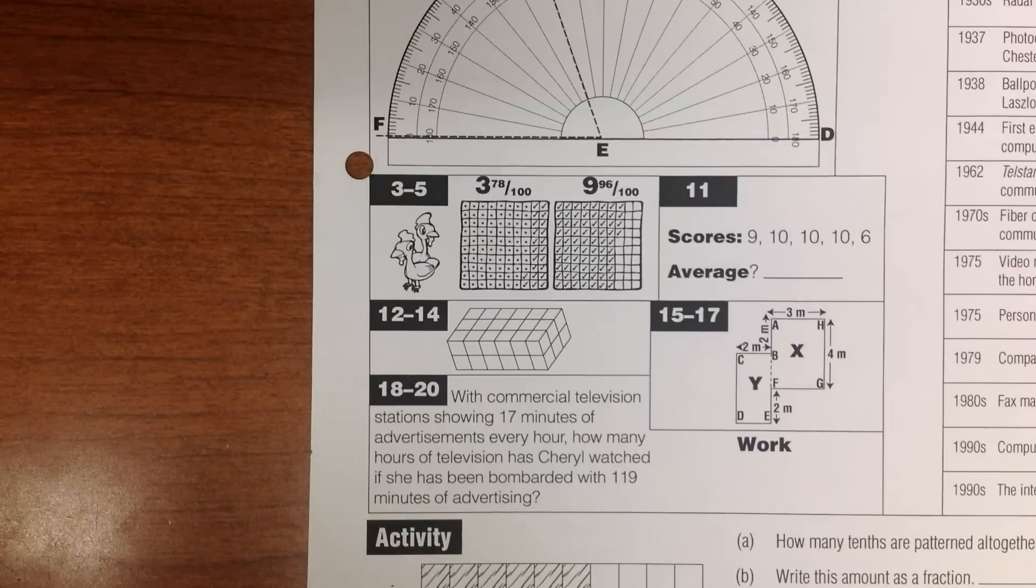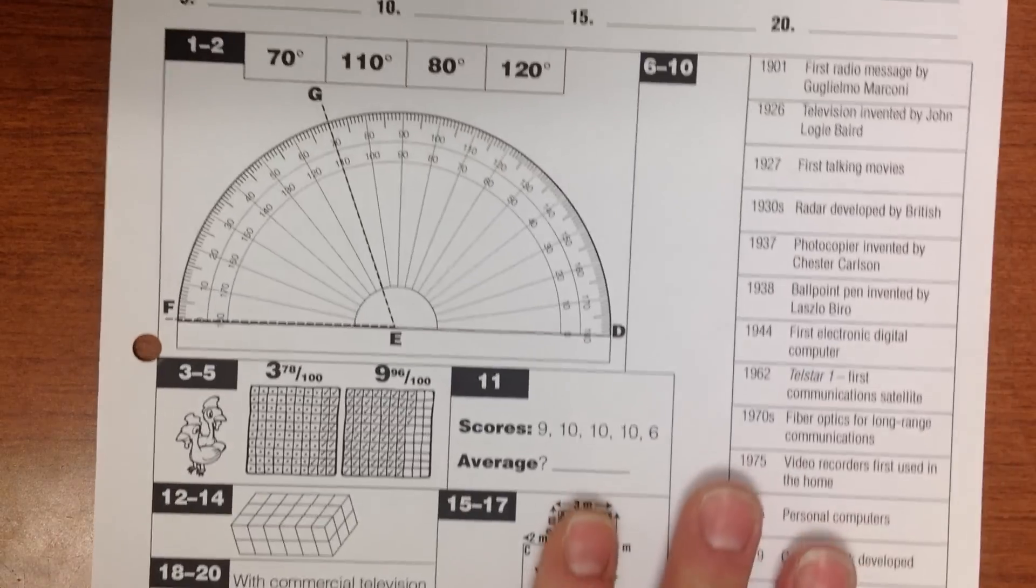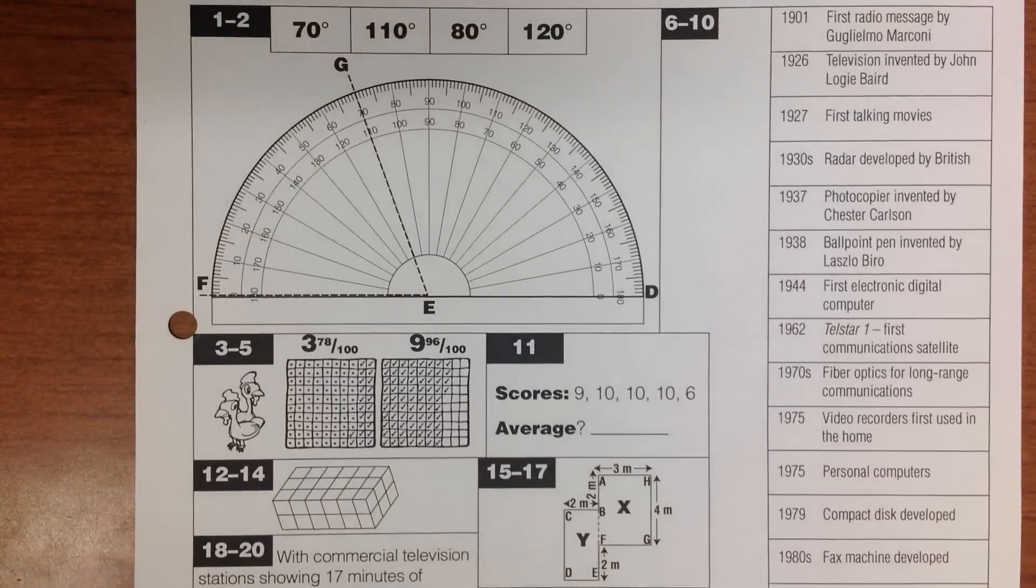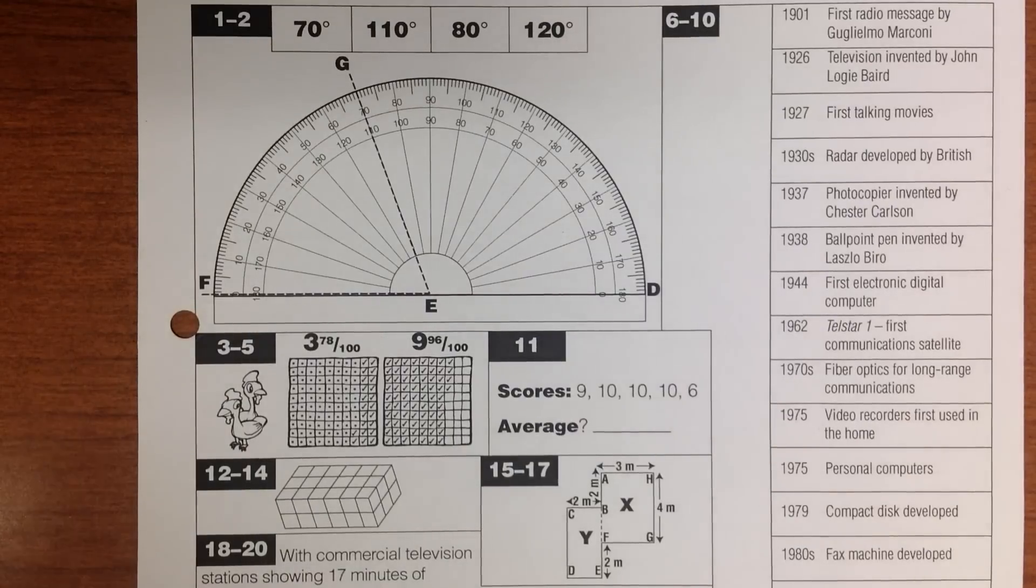The next five questions are about the timeline right here on your paper. And you won't be able to see it, so you'll have to look on yours, because I think it cuts off the very bottom one. Number 6.